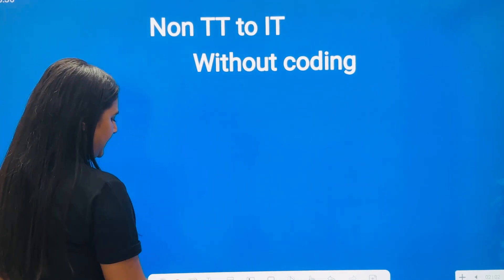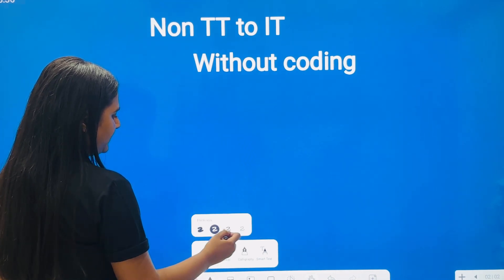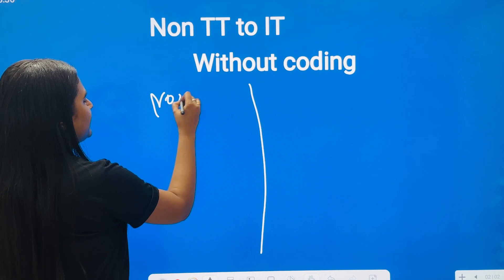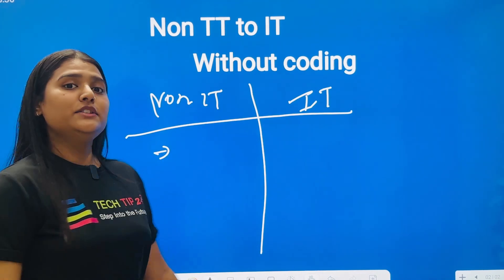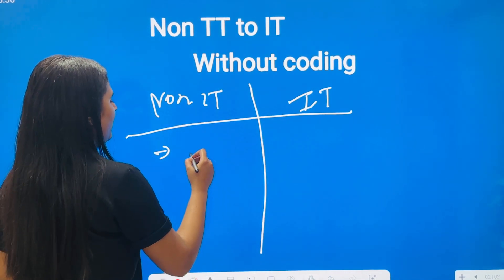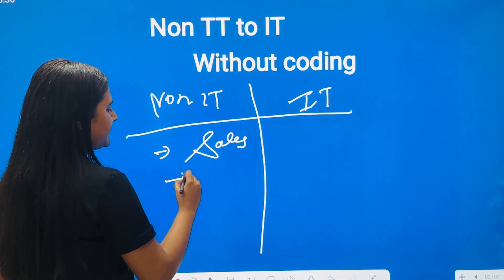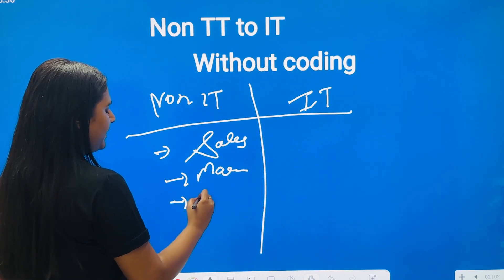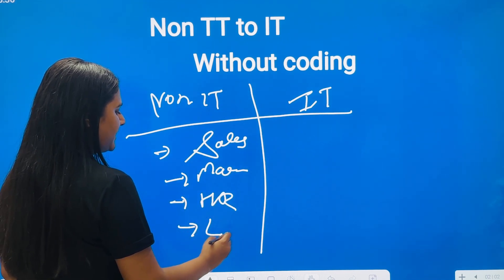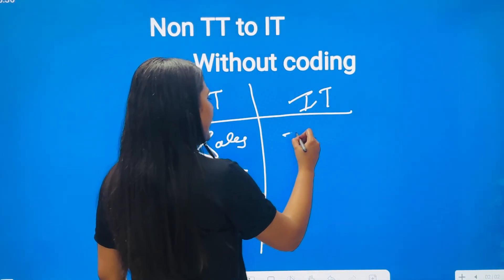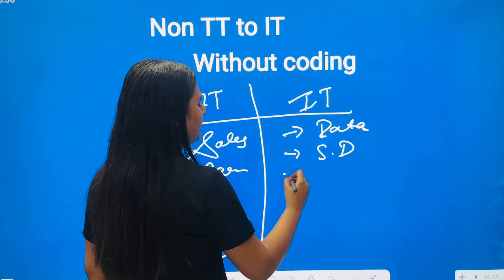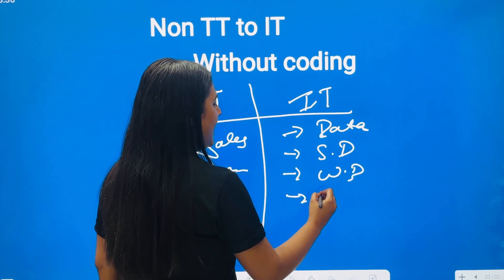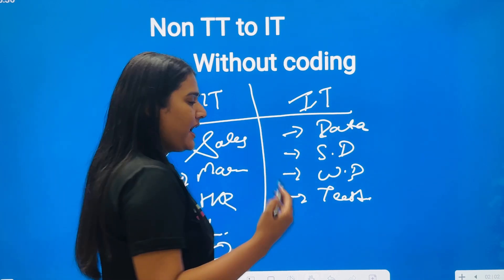As you can see, we have a simple non-IT domain. Let me help you with the proper difference. This is non-IT and this is a proper IT domain. Non-IT domains can be like core sales, a core marketing department, core HR department, core logistics department, core operations department. IT can be like a proper data department of the company, a proper software development department, web development department, or some sort of testing — where we need to work with proper systems and proper coding.